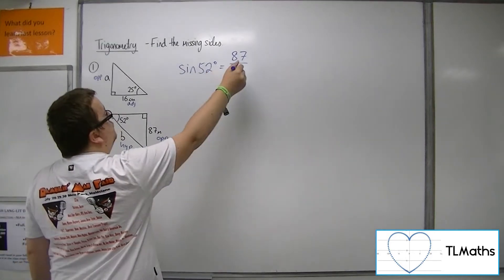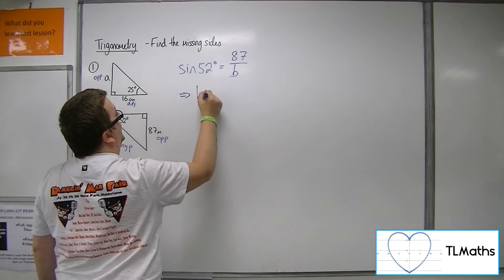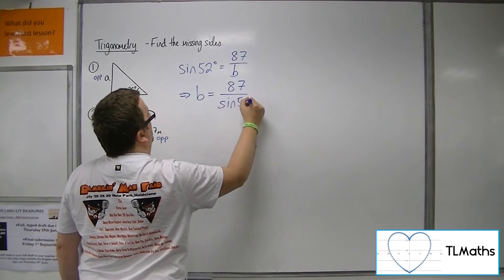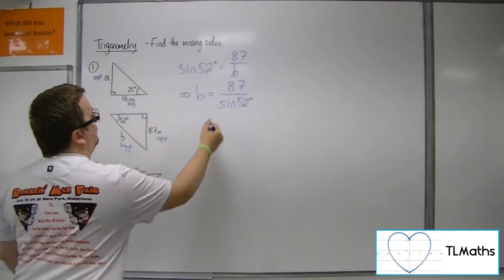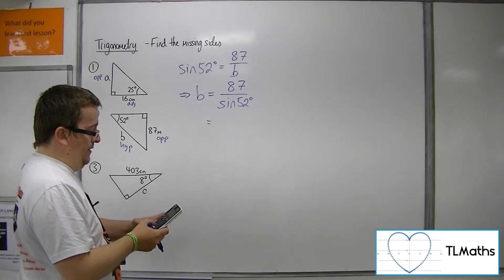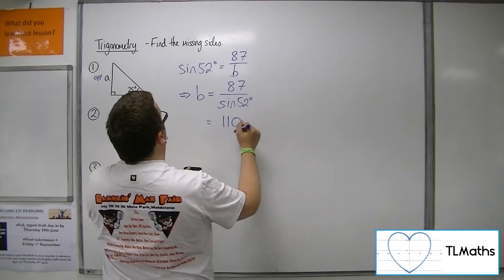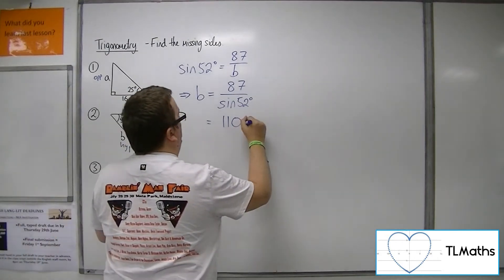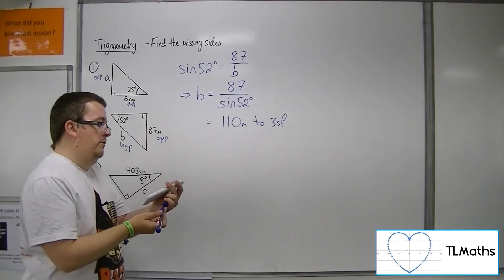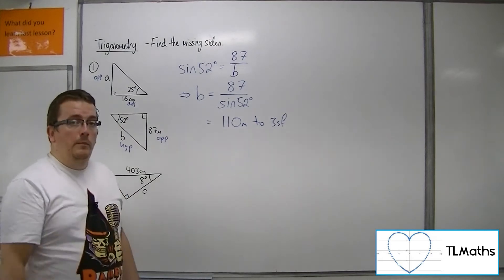So if we rearrange this, multiply it by B, divide through by sin of 52, we get that B must be 87 divided by sin of 52. So 87 divided by sin of 52 degrees is 110 metres to three significant figures — 110.4045847.